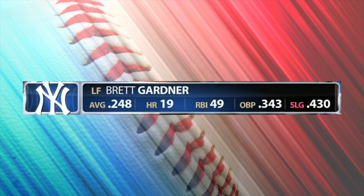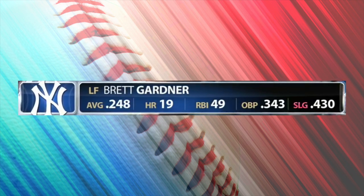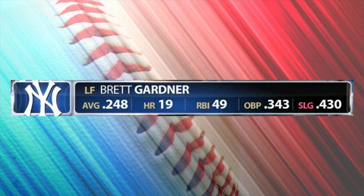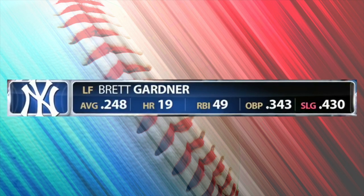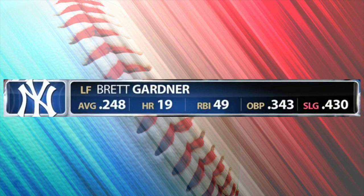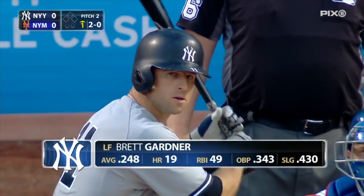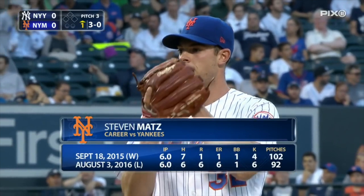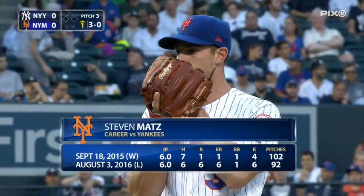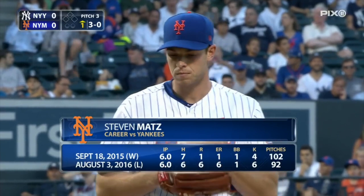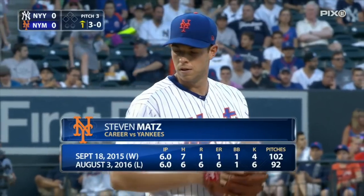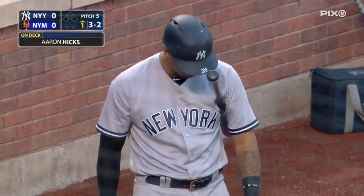In my opinion, slugging percentage is the most important statistic about a hitter. You calculate the sum of all hits that allowed the hitter to reach first, second, or third base or to hit a home run, then divide by the number of times at bat. If the number is high, you're dealing with a very good player. Here we can also see that Steven Matz has already played against the Yankees in his career — not necessarily with the Mets. He won in September 2015 (W means won) and lost in August 2016 (L means lost). On deck means that the next hitter is ready to enter the field.